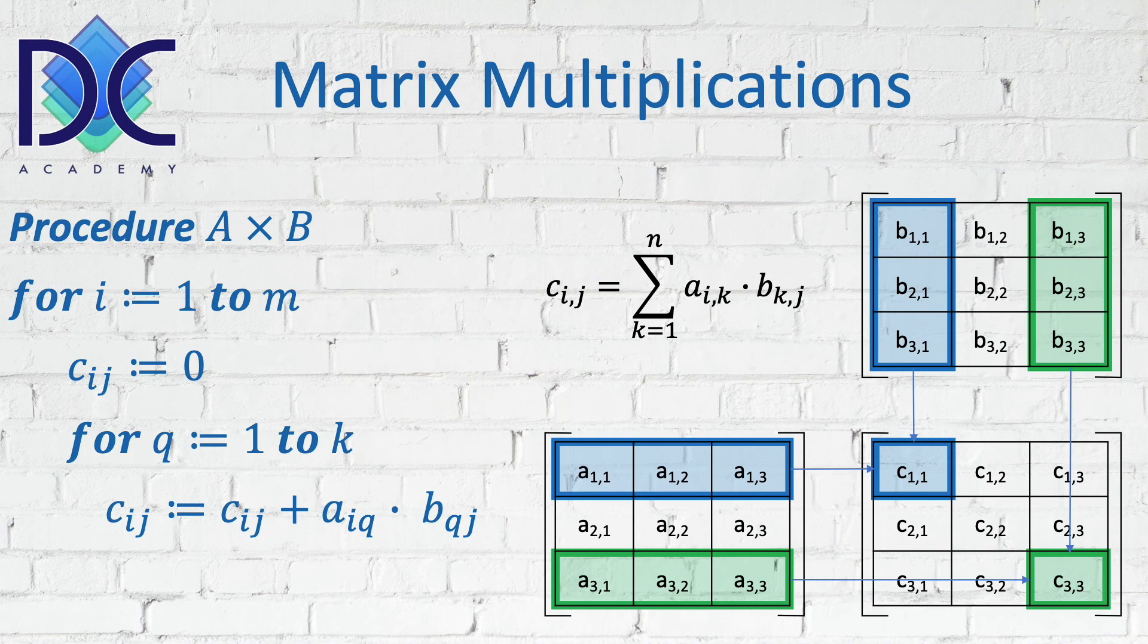Then we do this again for the next step. We add A12 multiplied with B21—that's the new C11.